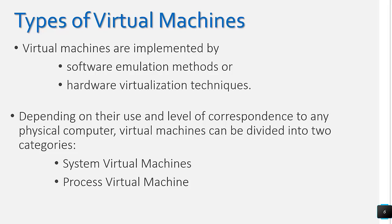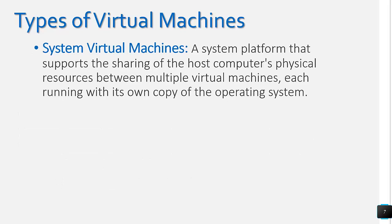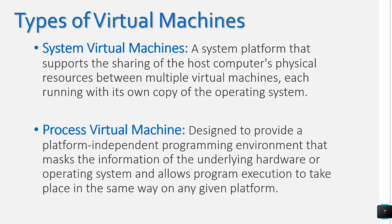Depending on the use and the level of correspondence to any physical computer, a virtual machine can be divided into two categories: one is the system virtual machine and the second is the process virtual machine. System virtual machines provide a system platform that supports the sharing of the host computer's physical resources — like hard disk, RAM, and network — between multiple virtual machines, and each virtual machine has its own copy of the operating system. The process virtual machine provides a platform-independent programming environment, masking the information of the hardware or operating system and allowing program execution to take place in the same way on any given platform.